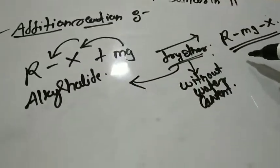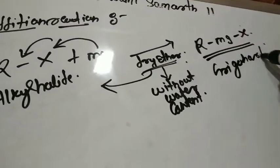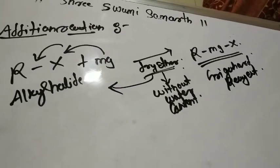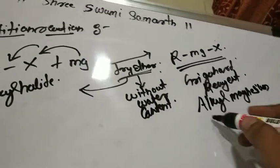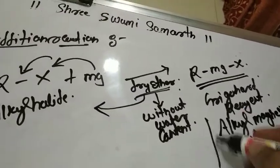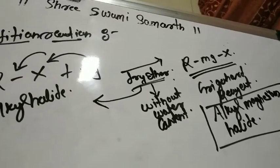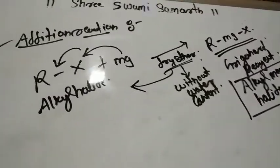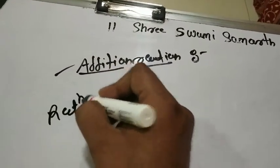When an alkyl halide reacts with magnesium in presence of dry ether as a solvent, it gives alkyl magnesium halide. This alkyl magnesium halide is called the Grignard reagent — RMgX. This is very, very important. We are going to use this Grignard reagent to carry out a number of reactions.